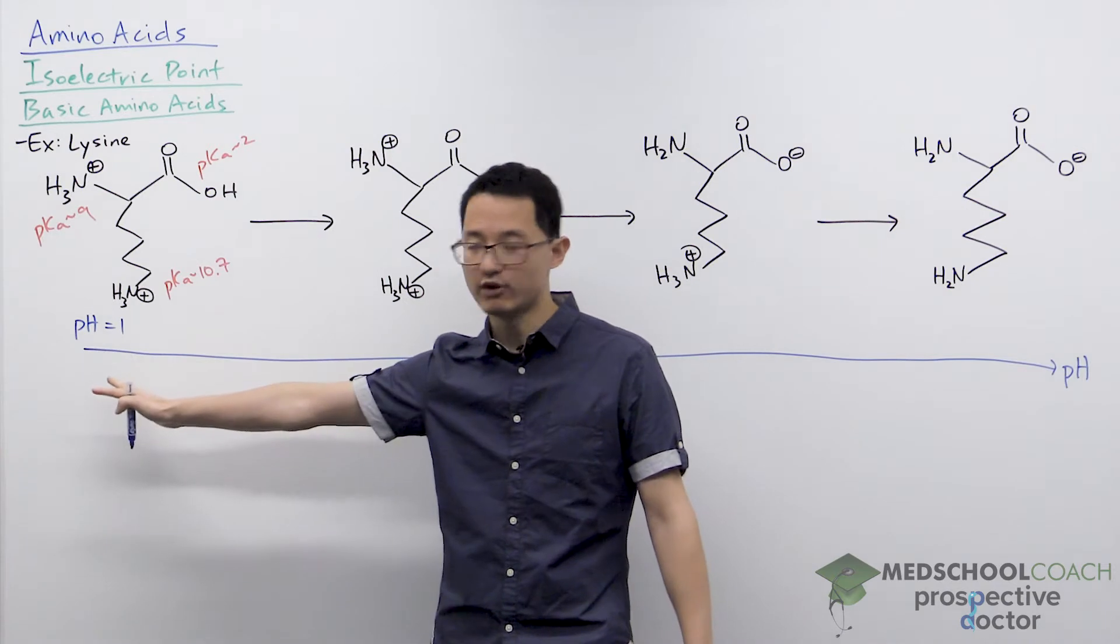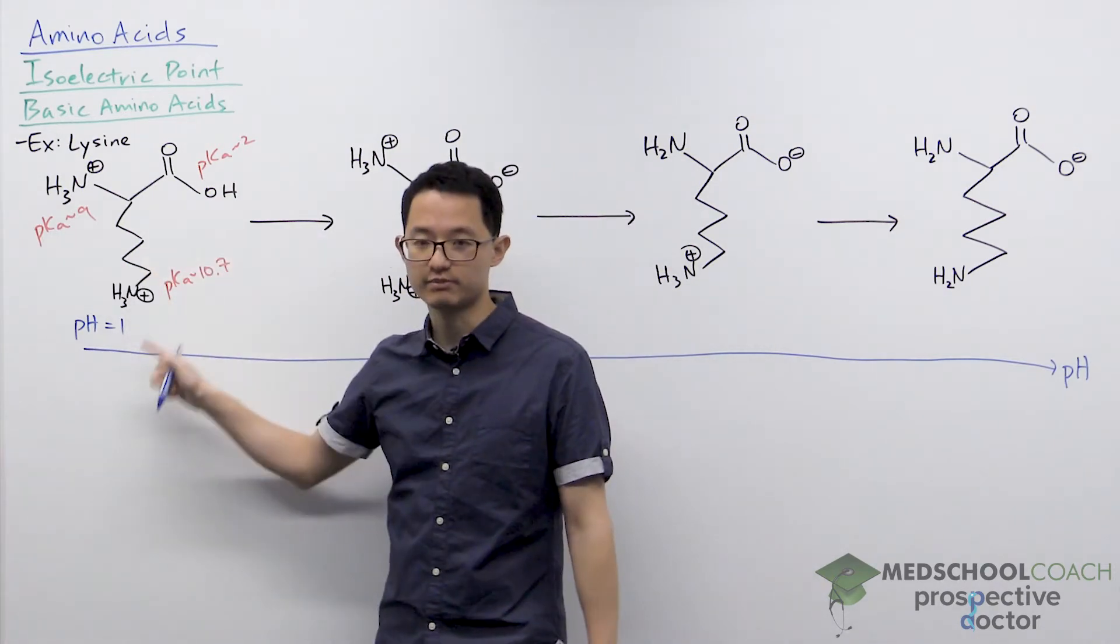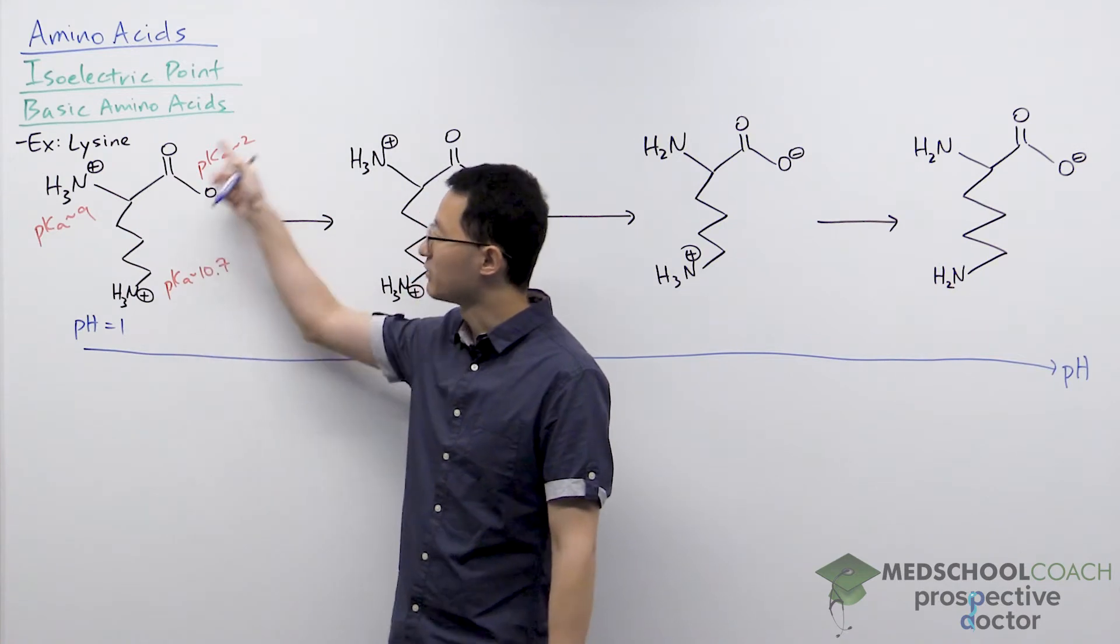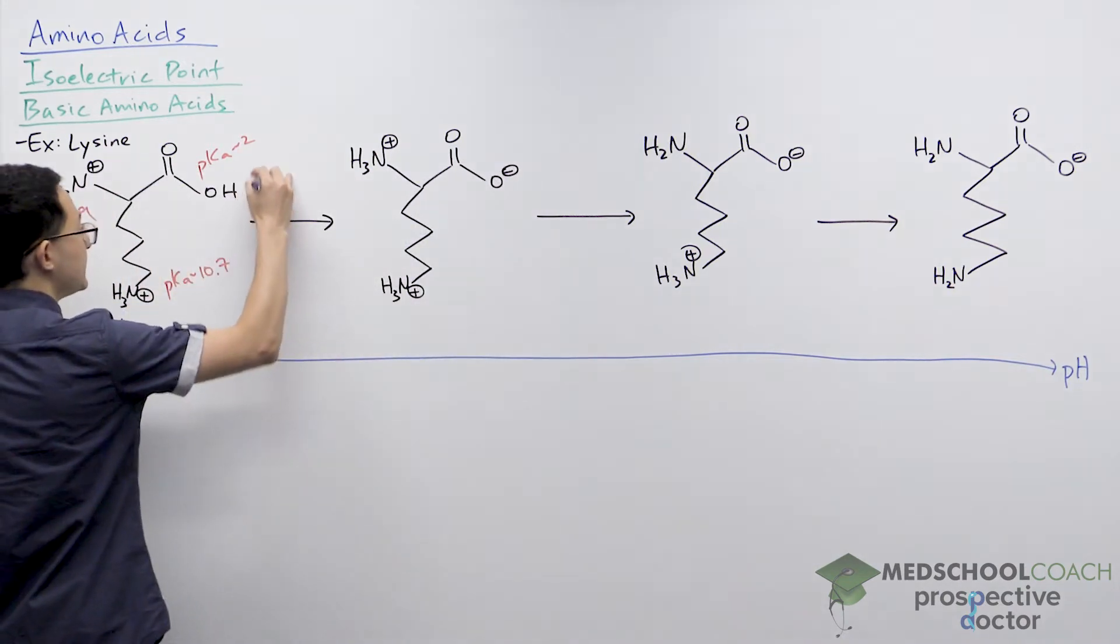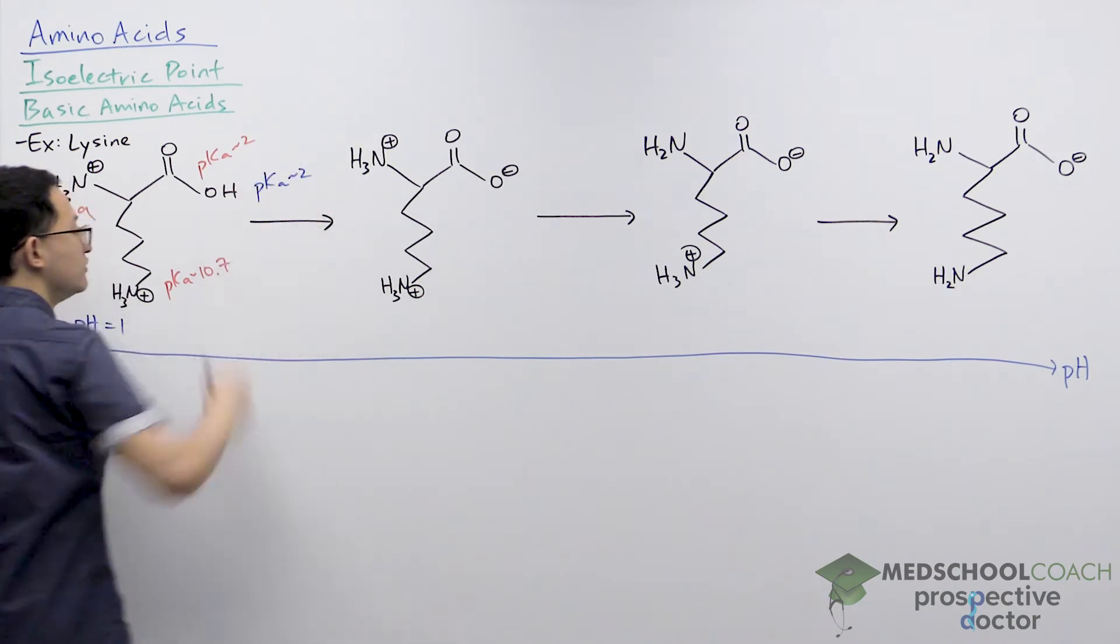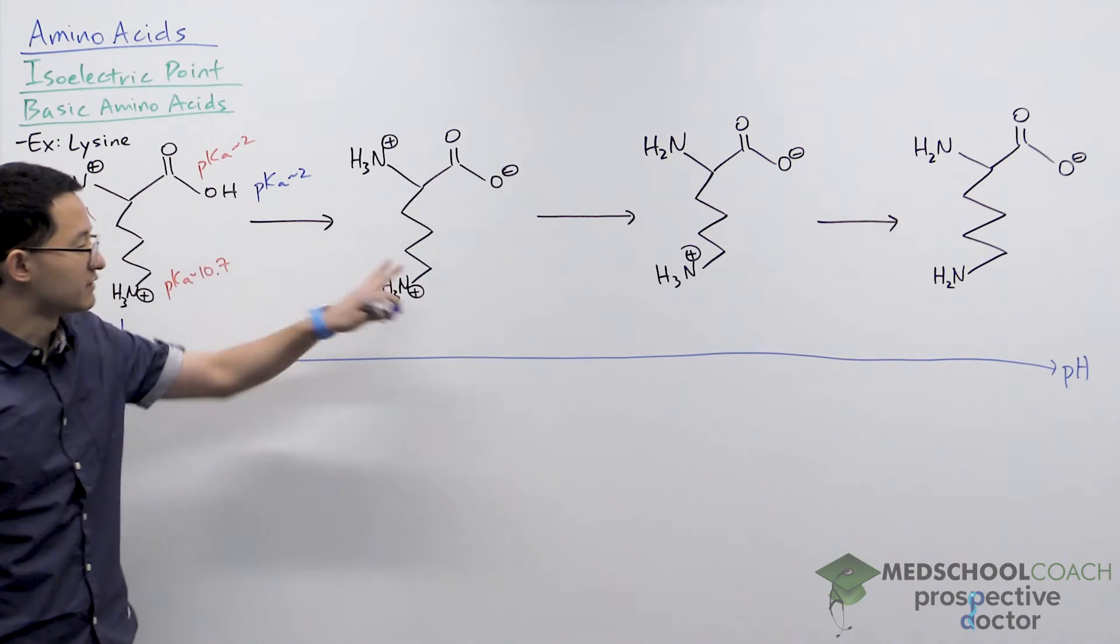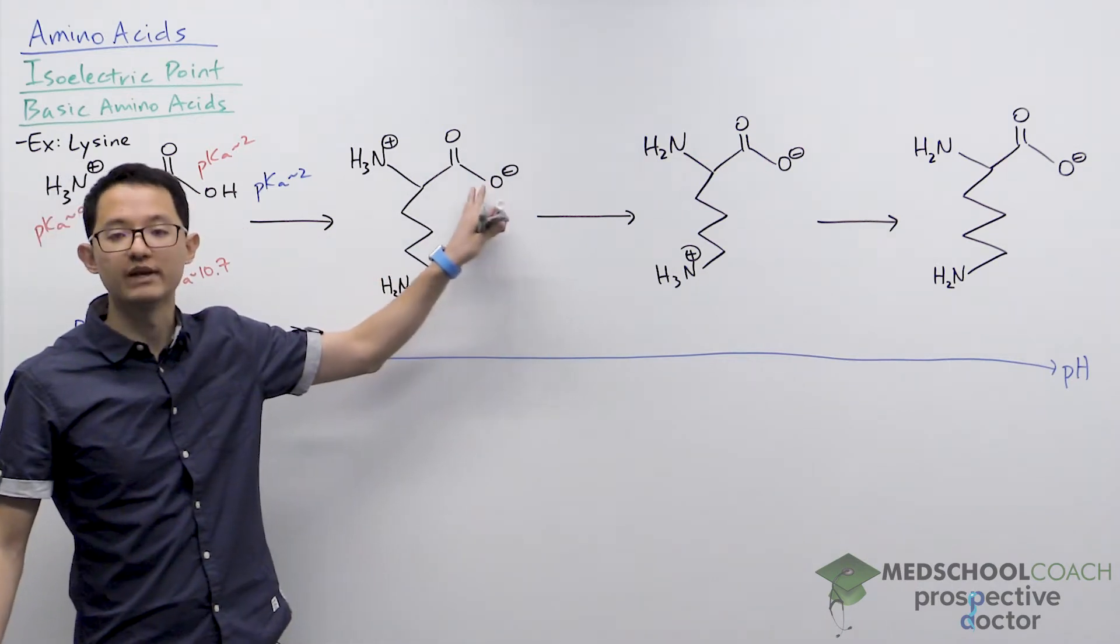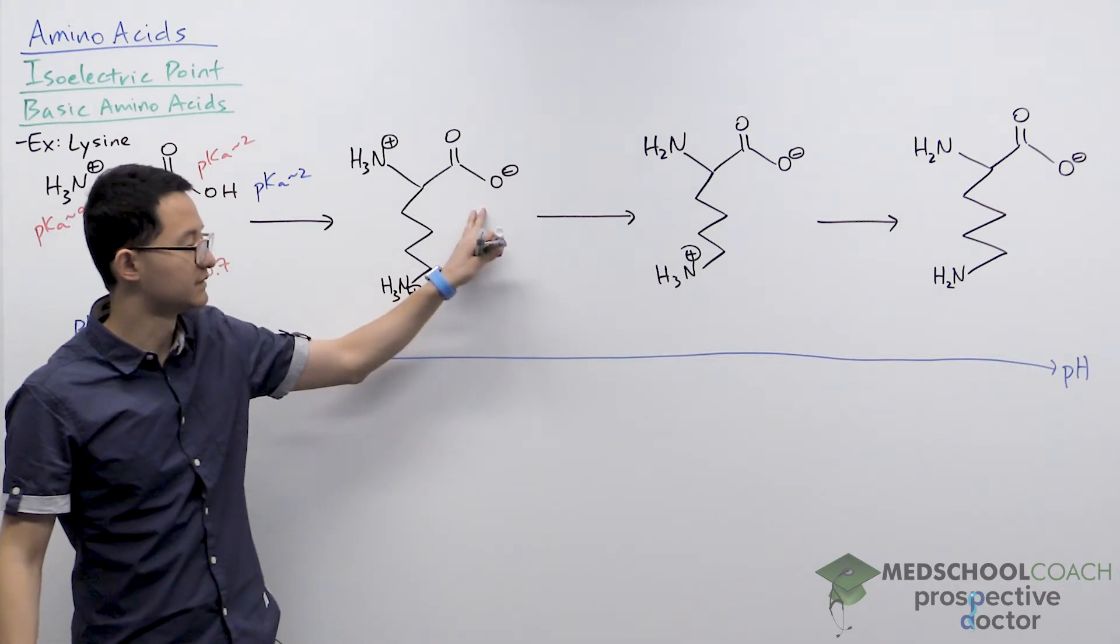Starting at a pH of 1, as you increase the pH, the first acidic functional group to be deprotonated is the carboxylic acid functional group. Once we exceed a pH of about 2, the pH will be greater than this pKa of 2, so this carboxylic acid will be mostly in its deprotonated form, the carboxylate.